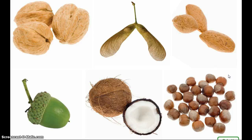Germination is when a seed begins to grow or sprout. Certain conditions are required for germination to happen. In the temperate regions of the world where we live, the seasons affect the life cycle of living things, especially plants. Therefore, when it is warm enough and there is enough direct sunlight as well as water from the rain, the seed splits open and germination begins. This usually occurs in the spring when there is sufficient warmth and rain.